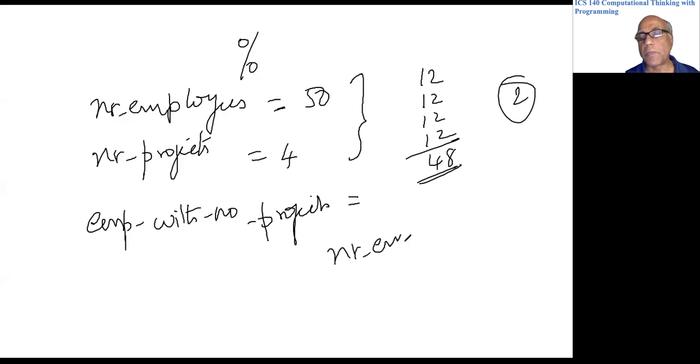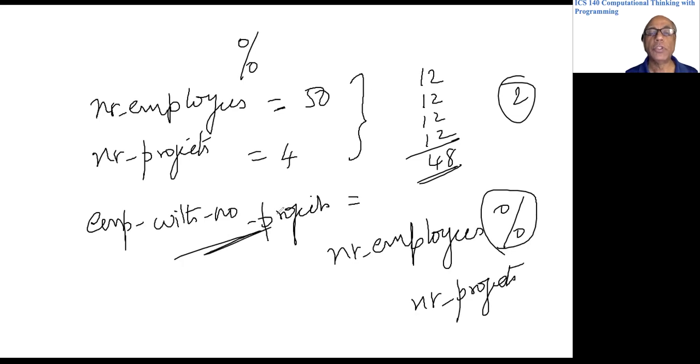You can compute this in Python by writing number of employees percent number of projects. So this percent symbol will give you the remainder after division, so that will be two. So for calculations like this you would use percent, and this is actually quite frequently used.